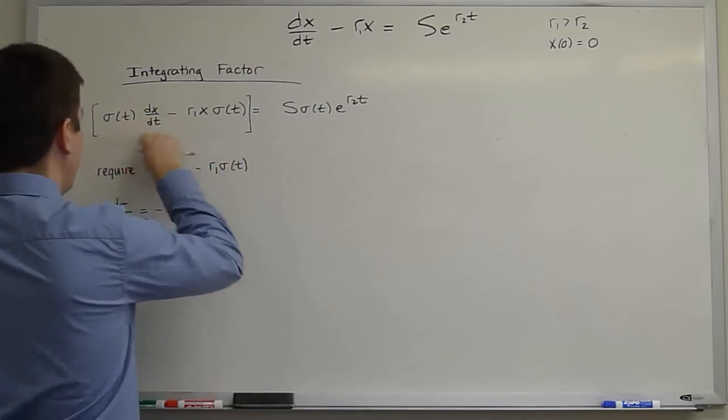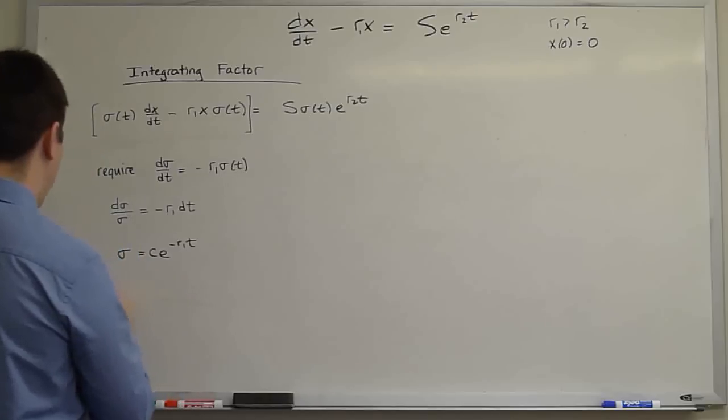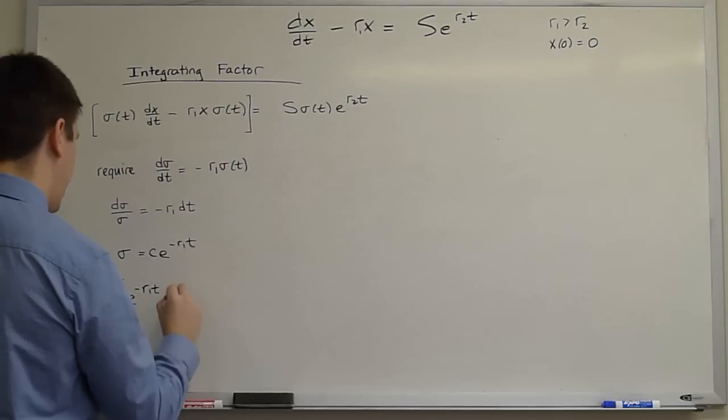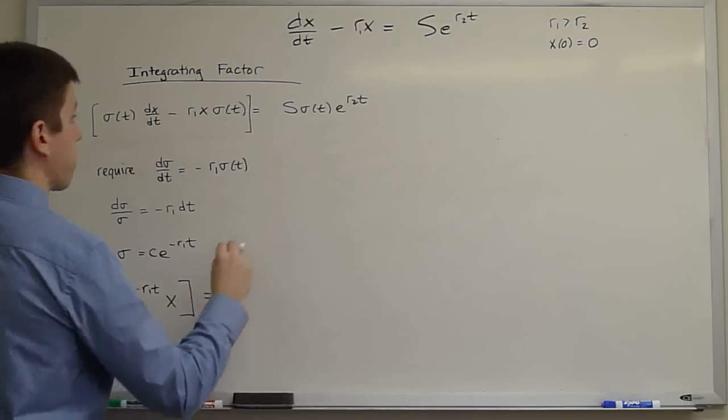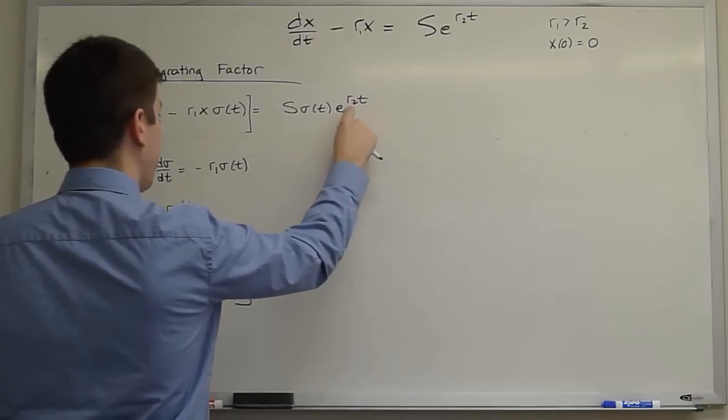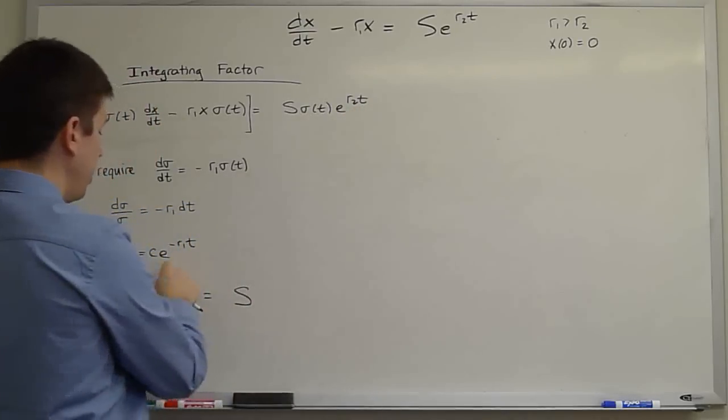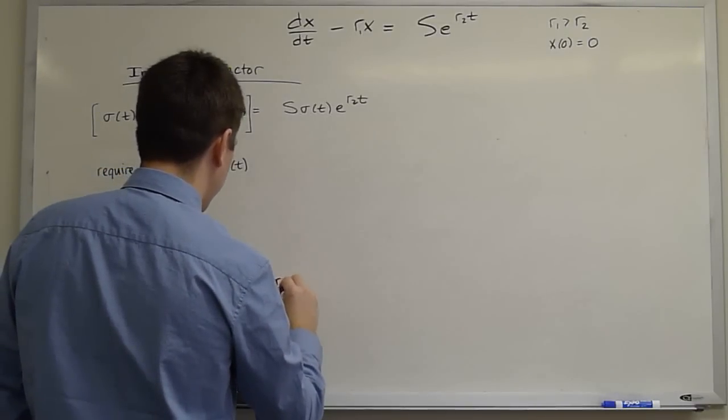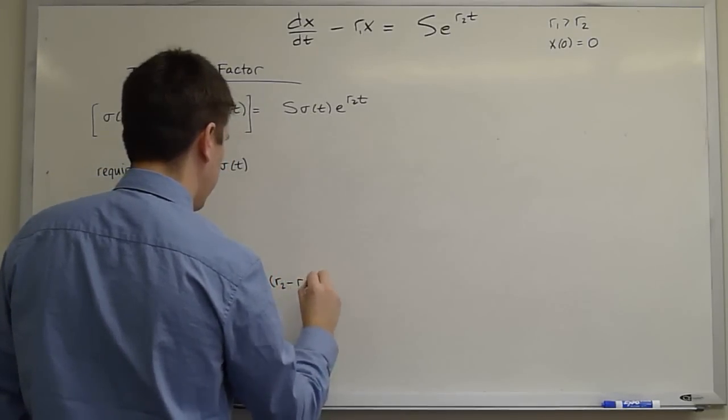And then this left hand side will become d by dt of e to the minus r1 t times x equals, on the right, s times e to the r2 t times e to the minus r1 t is e to the r2 minus r1 t.